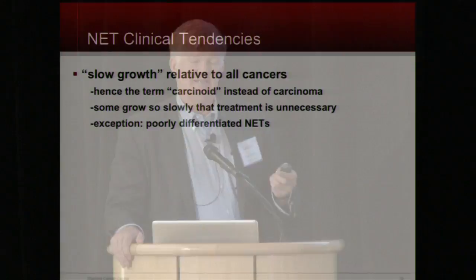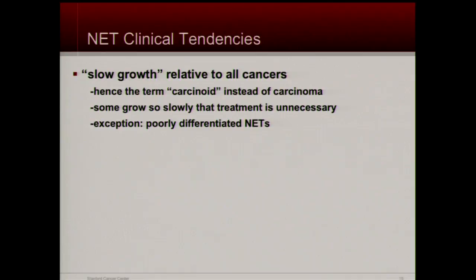Where the rubber meets the road is how does the tumor behave? We can learn about the genes, look at the pathology, call it low-grade or high-grade, but how does it behave in the person? Neuroendocrine tumors are slower growing — though I don't like to use that term with patients, because it's never slow enough if you're the one with the tumor. The slow growth is sort of classic to these tumors, and hence the term carcinoid, because it doesn't actually grow like a carcinoma.